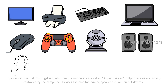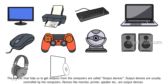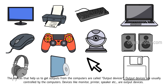The devices that help us to get outputs from the computers are called output devices. Output devices are usually controlled by the computers. Devices like monitor, printer, speaker, etc. are output devices.